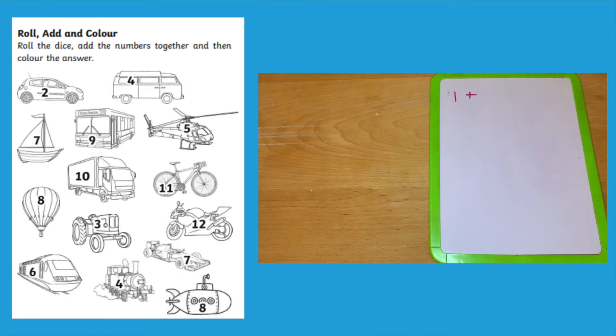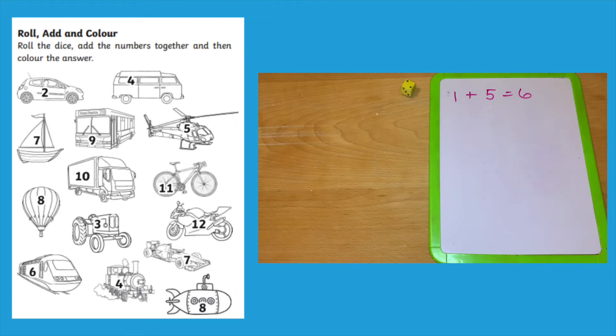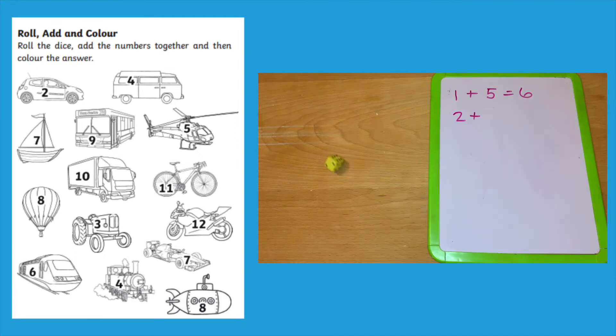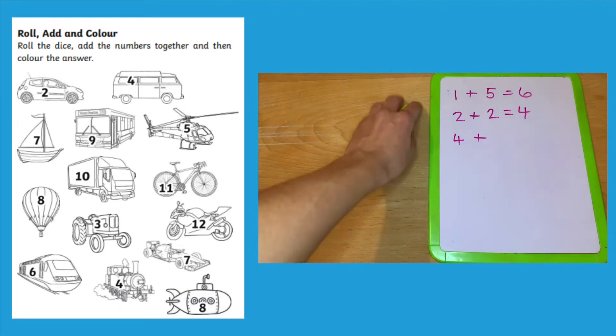For this roll, add and color activity your children have to roll the dice twice and add the numbers together. If they add up to a number that's on one of the modes of transport they can color that mode of transport in.